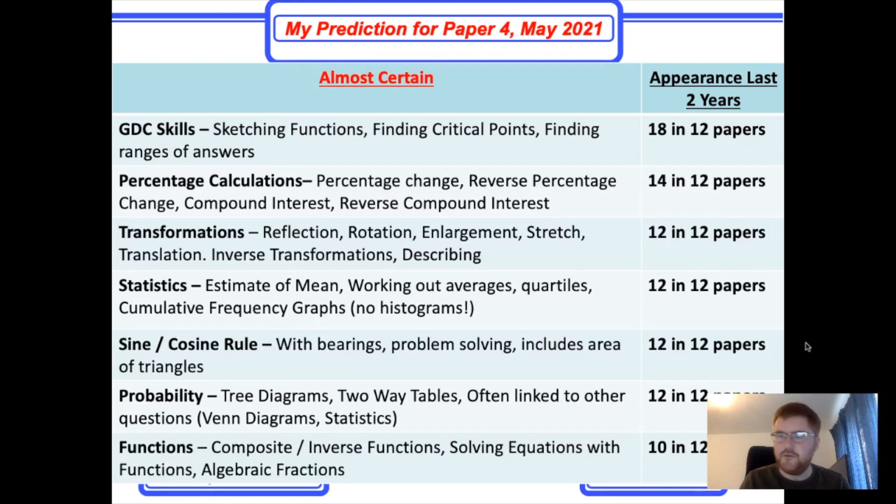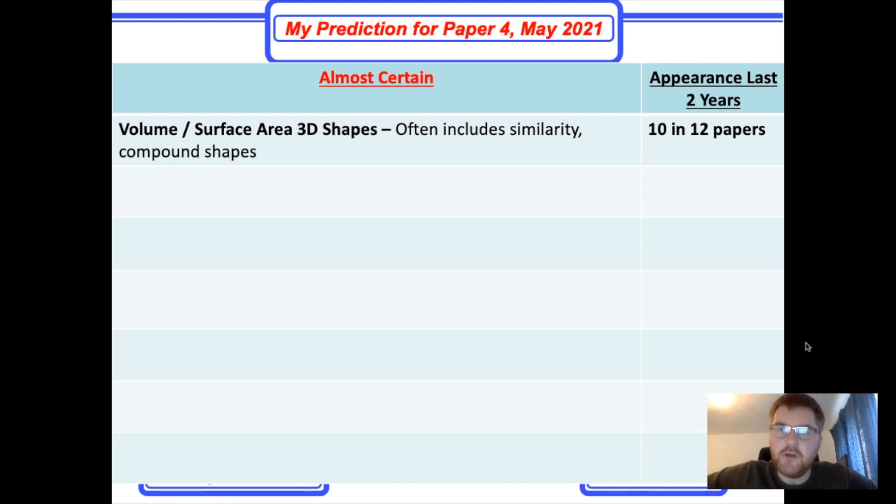So you can see, if you know these 8 topics, you're going to be covering, I would say, 60 to 70% of the paper. Yes, that much. And if you look at my previous prediction video, about 90% of what I said came up. So make sure you take note of the almost certain category.